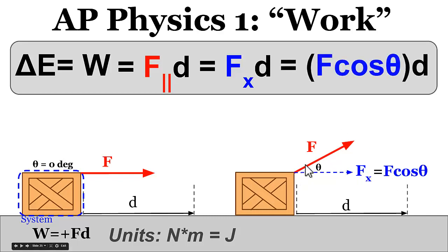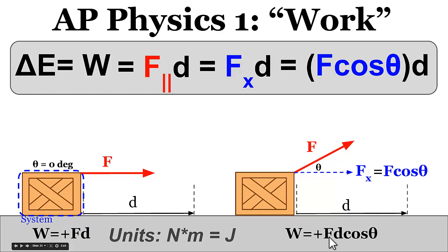We can calculate the x-component of the force — since that's the adjacent side of our triangle — as F·cos(θ). So for an angled force, the work done is F·cos(θ) times the displacement. This is positive because the x-component of the force is in the same direction as the object's displacement.